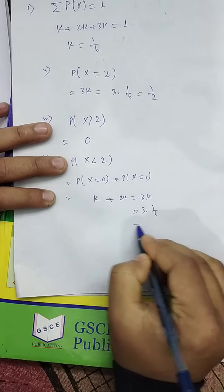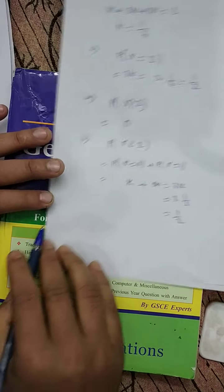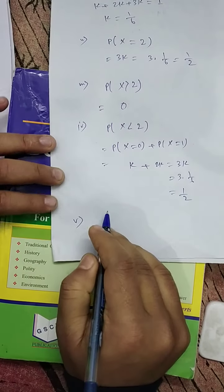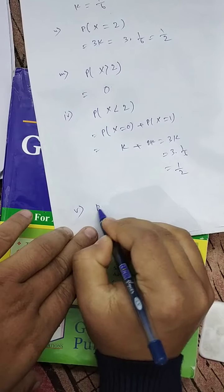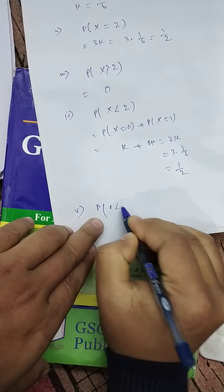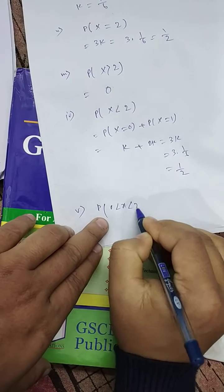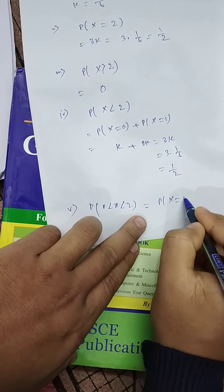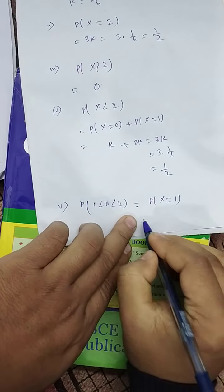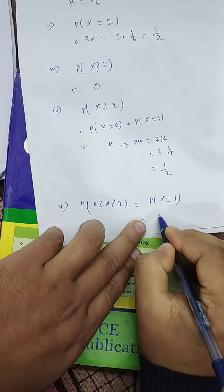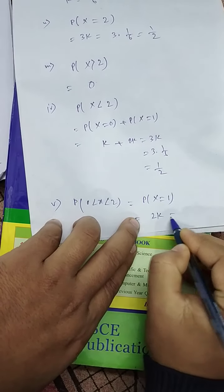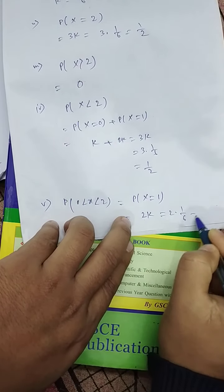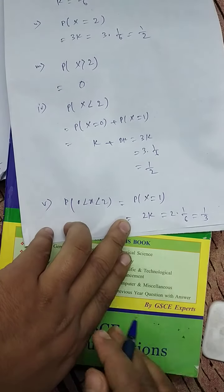For part 5, P(0 < X < 2) = P(X = 1) = 2K, so 2 × 1/6 = 1/3.